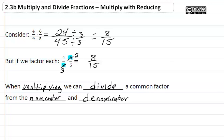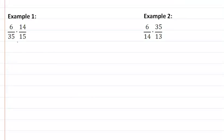When we go into our examples, looking at example one, I notice that 6 and 15 have a common factor of 3. So if I take 6 and divide it by 3, I get 2. 15 divided by 3 gives me 5.